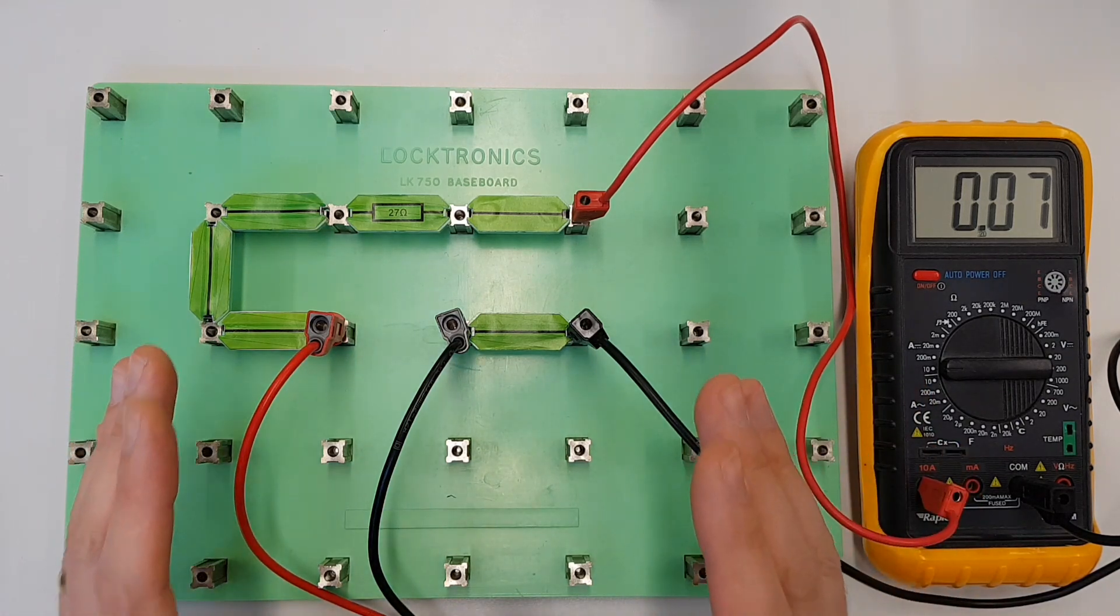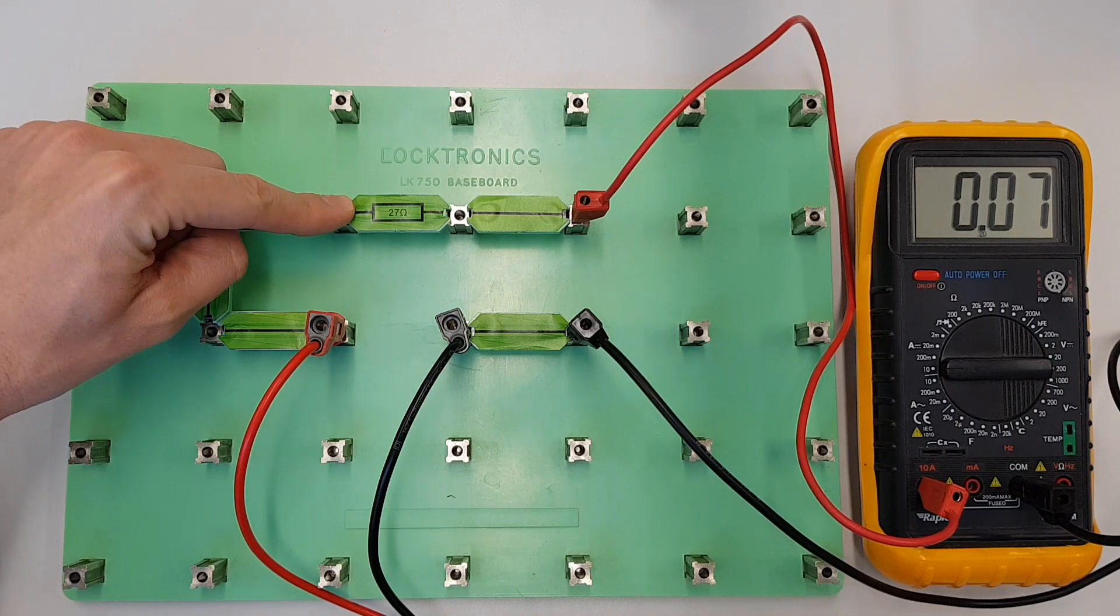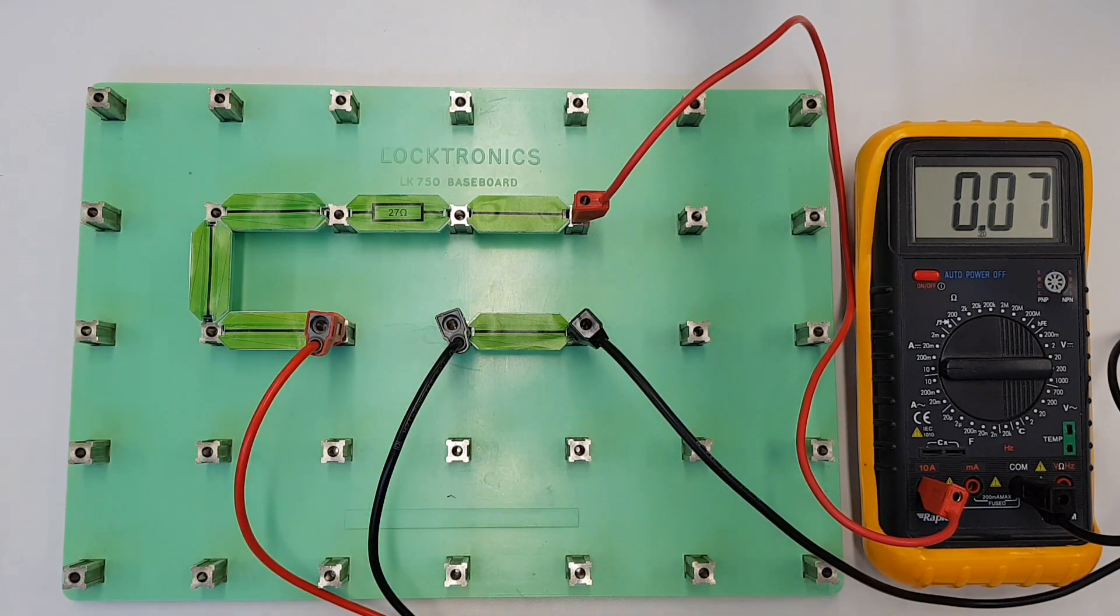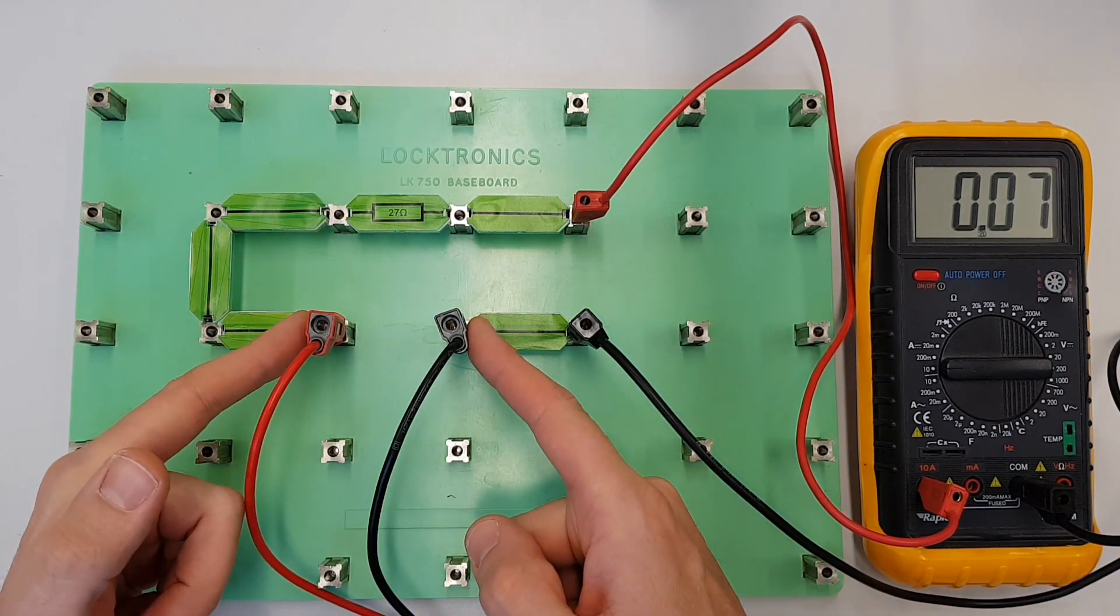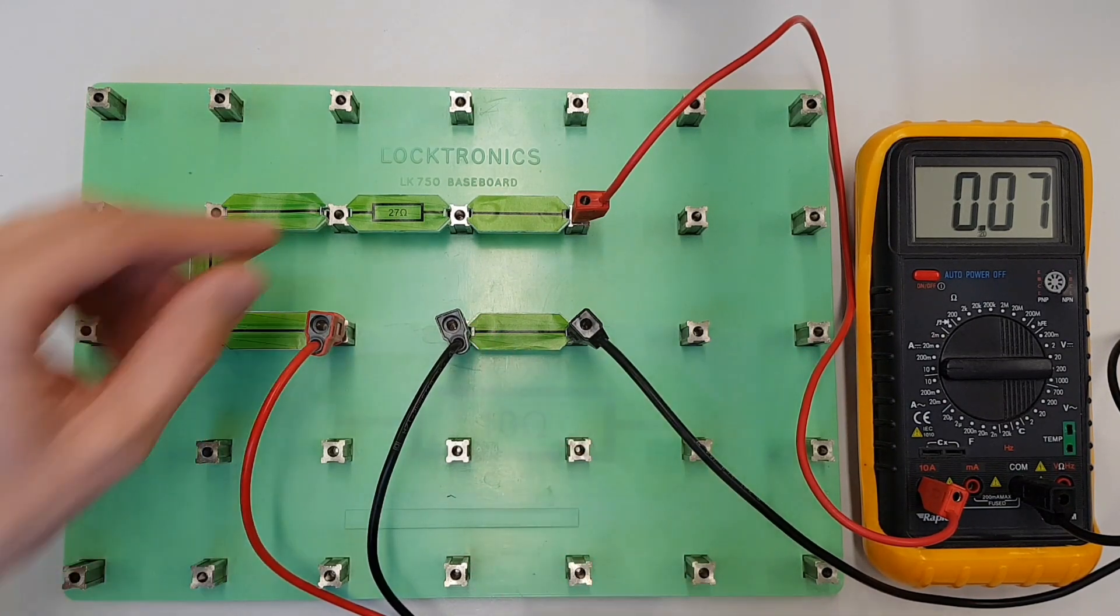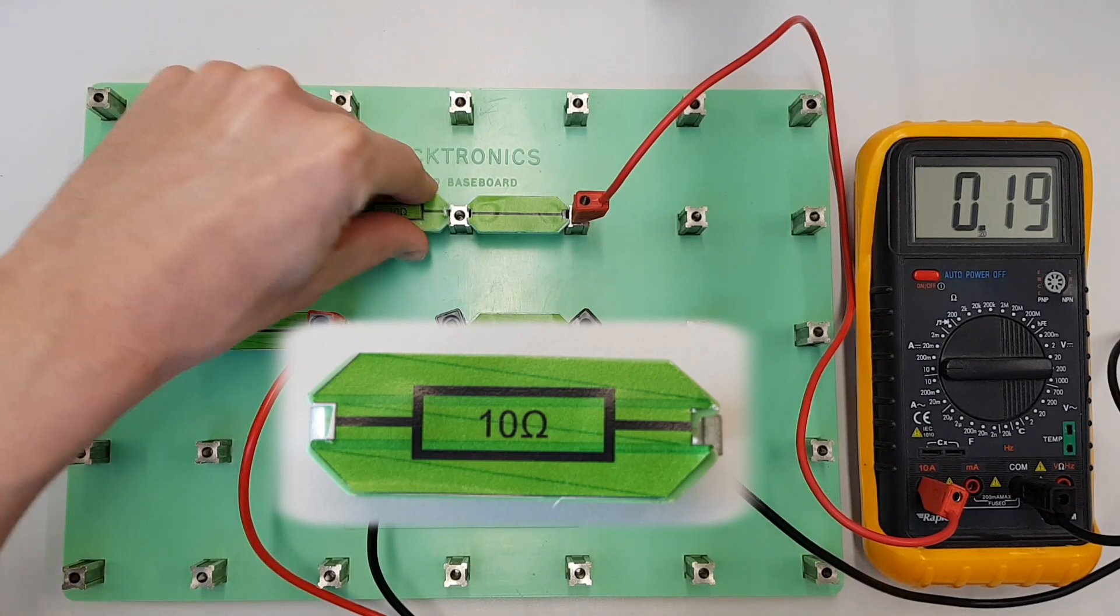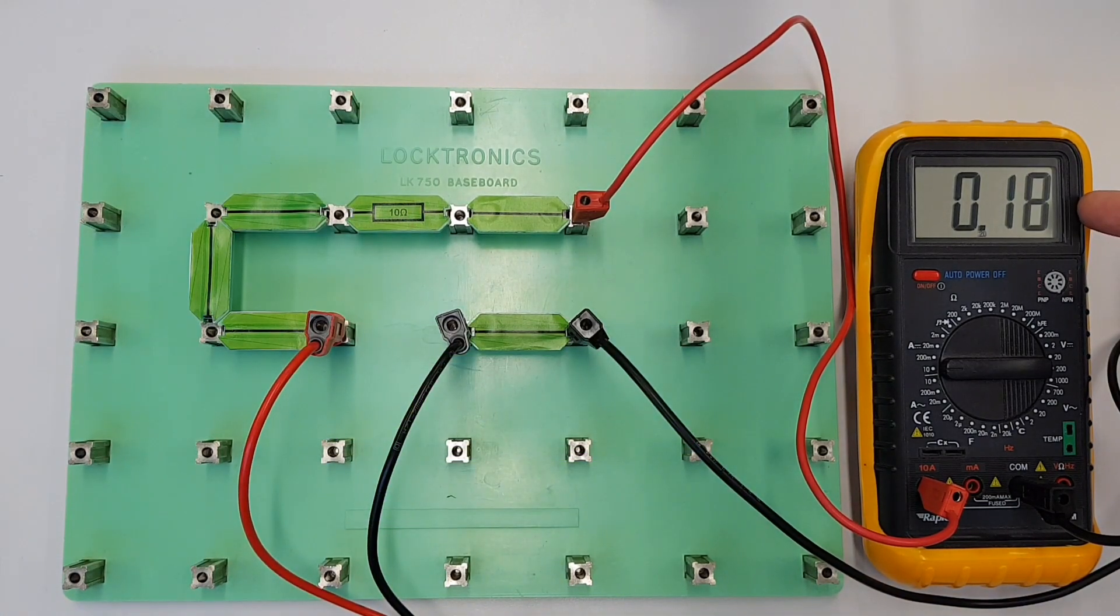So what we're going to do now is look at the other thing that we can change in this circuit. So we changed the resistance but what we haven't changed is the input voltage down here. This has been two volts throughout the whole of this experiment. So let's go back to our original 10 ohm resistor and we should get back to our original value there.